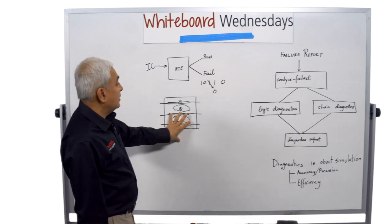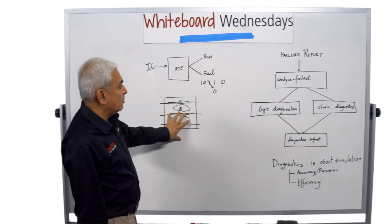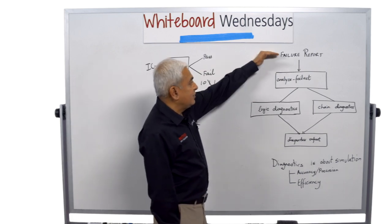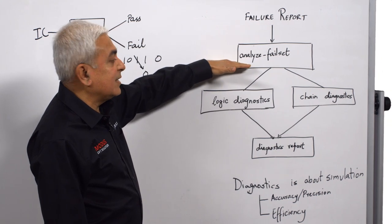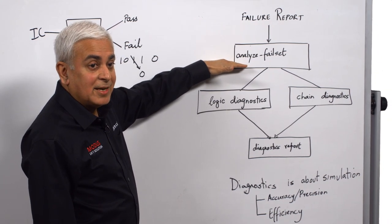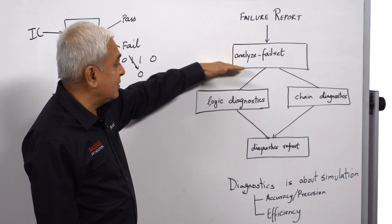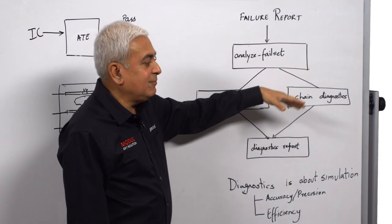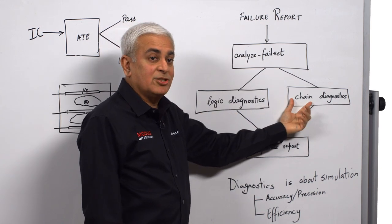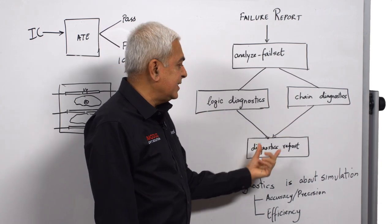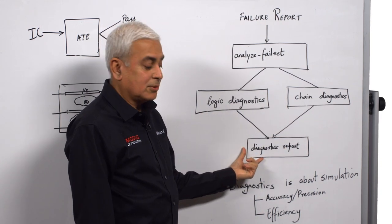So to do this in Modus, what we do is we read the failure report into Modus. We first analyze whether that particular failure is a logic failure or a chain failure. And then we have different algorithms to solve the logic diagnostics problem and the chain diagnostics problem. And at the end, we create a diagnostic report.